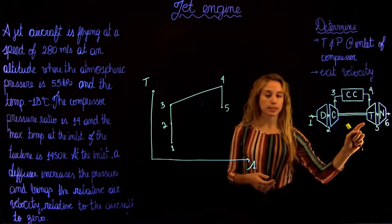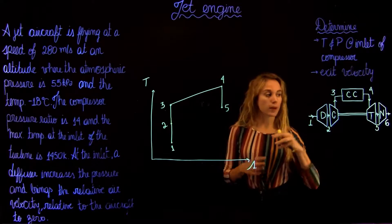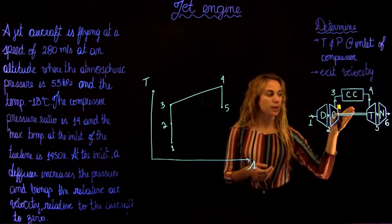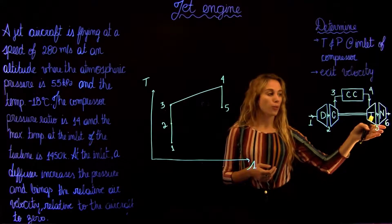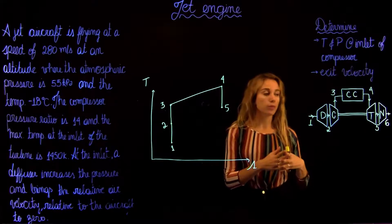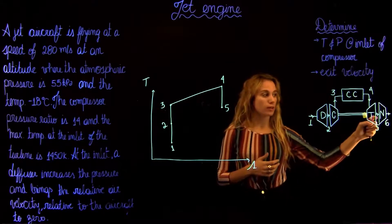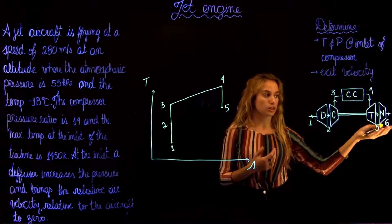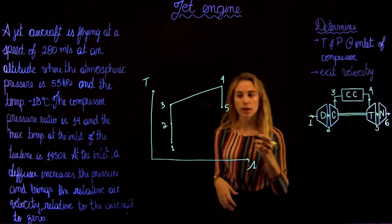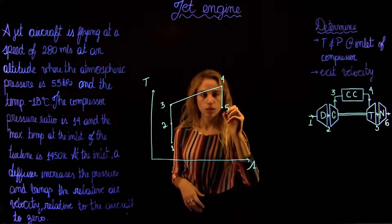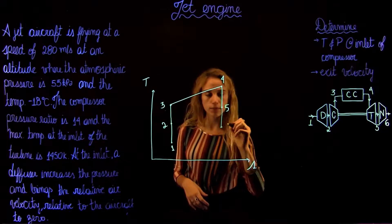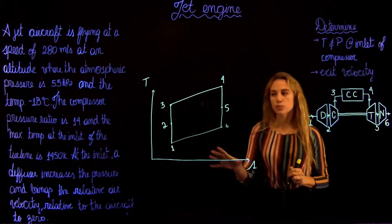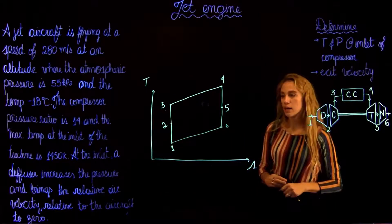After the isentropic expansion, the remaining hot gases are used to increase kinetic energy by passing them through a nozzle, where we accelerate the flow and create thrust. The exit velocity is going to be much faster than the inlet, so it makes the aircraft move. In our TS diagram, we then go back to state 1.